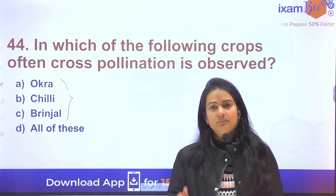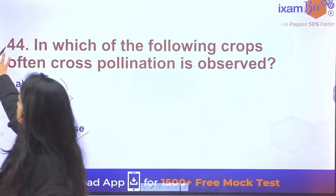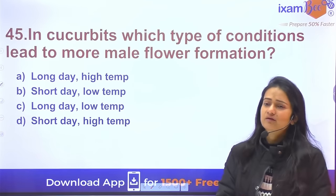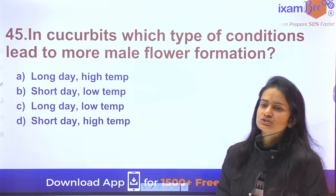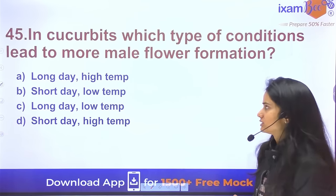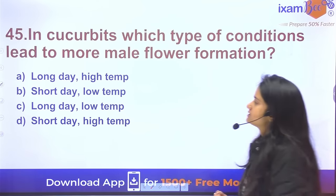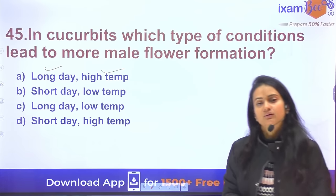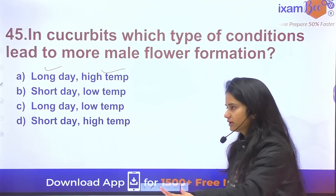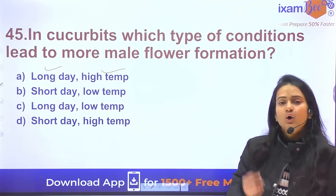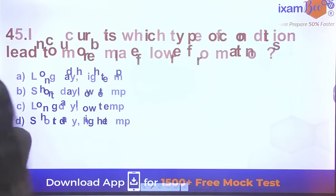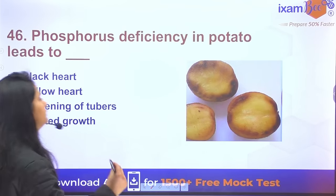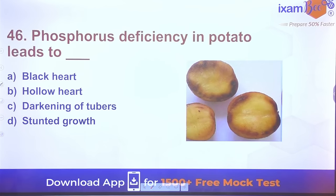Question 44: In which crops is cross-pollination often observed? Okra, chili, brinjal, and capsicum are often cross-pollinated species.